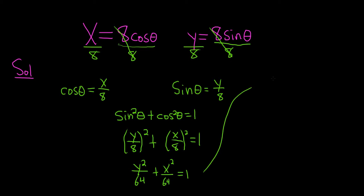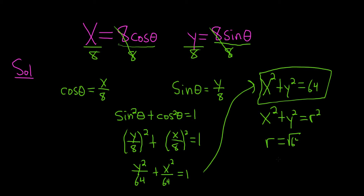If we multiply everything by 64, we end up with x squared plus y squared equals 64. And this is the rectangular equation of the parametric equations. Notice it fits the form x squared plus y squared equals r squared. This is the equation of a circle centered at the origin with radius equal to the square root of 64, so the radius here is 8.